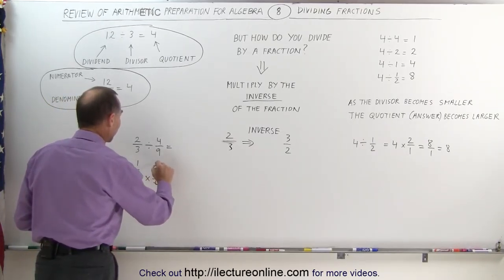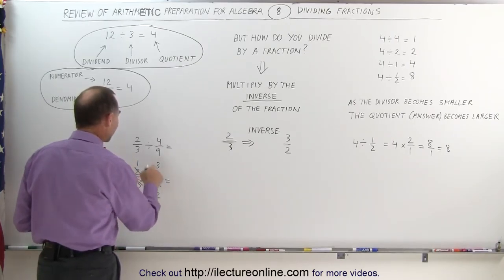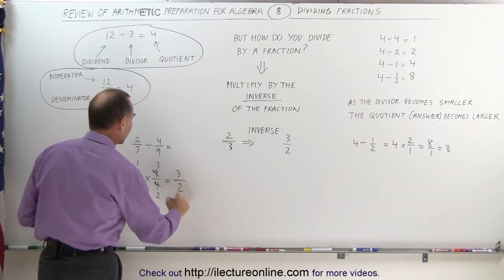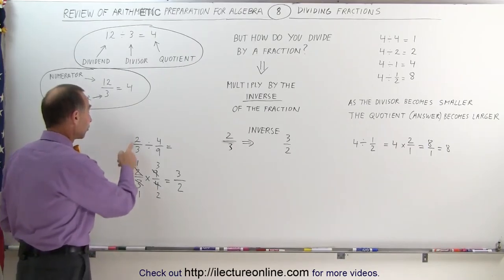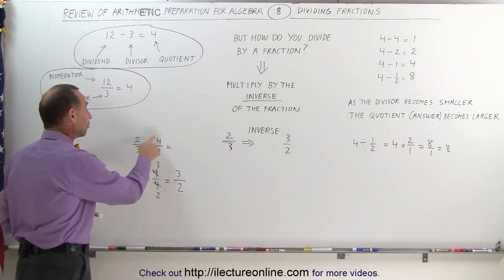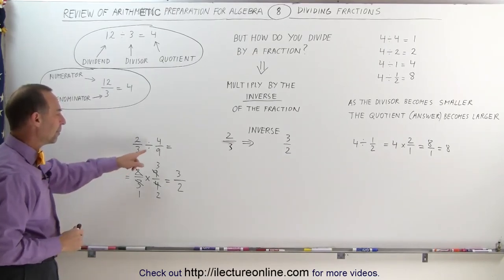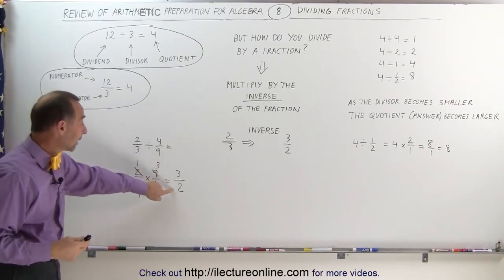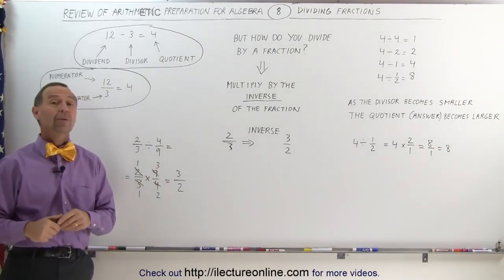2 and 4, they're both divisible by 2, so 2 divided by 2 is 1, 4 divided by 2 is 2. And 3 and 9, they can be divided by the same number 3. 3 divided by 3 equals 1, 9 divided by 3 equals 3. Now the result of this simply becomes 1 times 3 in the numerator, divided by 1 times 2 in the denominator, so the answer is 3 divided by 2. When you take the fraction 2 thirds and divide it by 4 ninths, you get 3 halves.